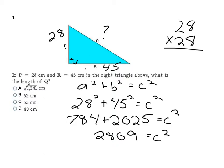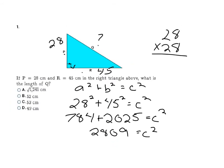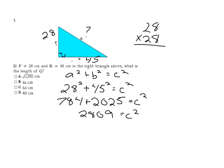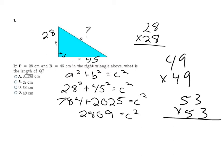Now I have to think about what number multiplied times itself gives me 2,809. Thankfully, they give me choices — it's multiple choice. I can try 49 times 49, or 53 times 53 to see if that gives me 2,809. And 53 times 53 actually does. So that means 53 is going to be the length of the hypotenuse, making C my final answer.